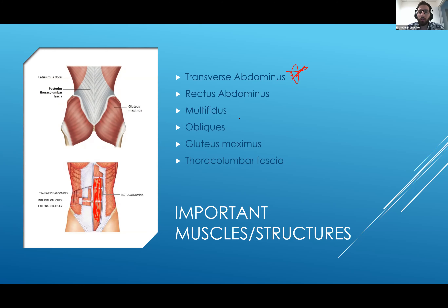You also have your obliques — the outer side muscles around here. If you're a golfer or do any rotational exercise, those are the muscles doing the work and where you get a lot of your power. They are another component of the core, and the stronger they are, the more stable your spine will be.